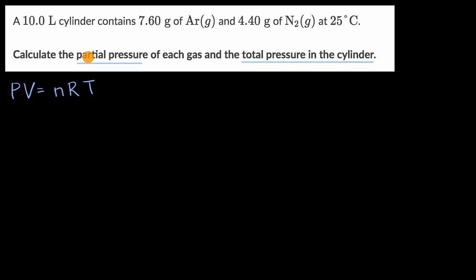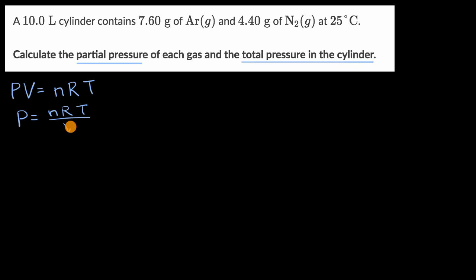In this case, we're trying to solve for pressure, whether it's partial pressure or total pressure. To solve for pressure, we divide both sides by V and get: pressure is equal to the number of moles times the ideal gas constant times the temperature, divided by the volume.